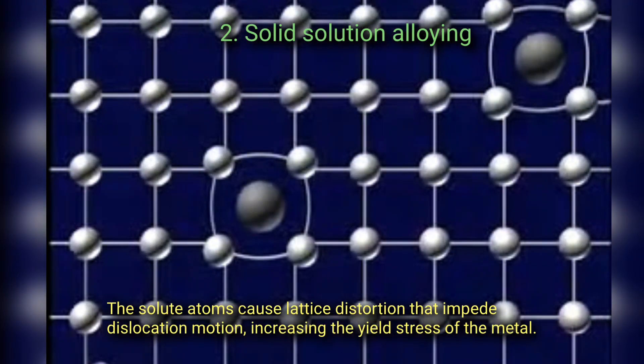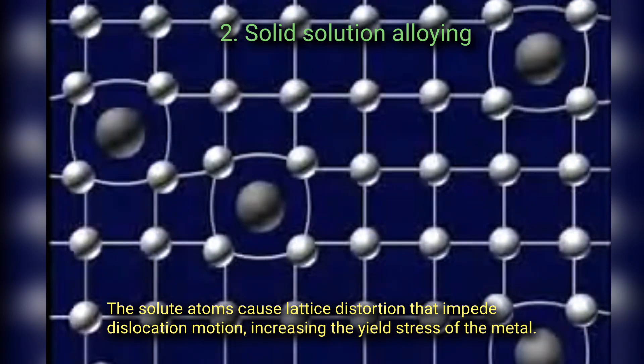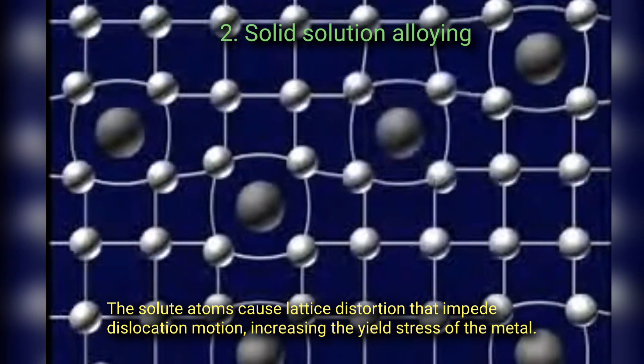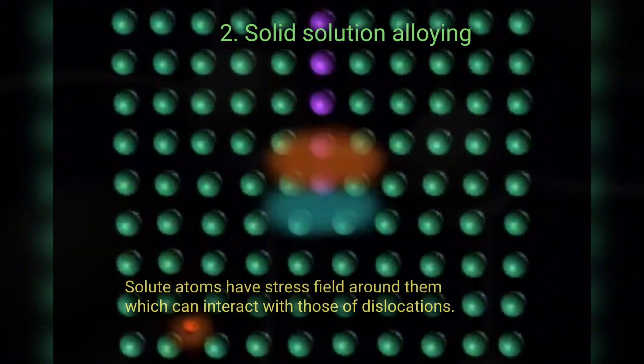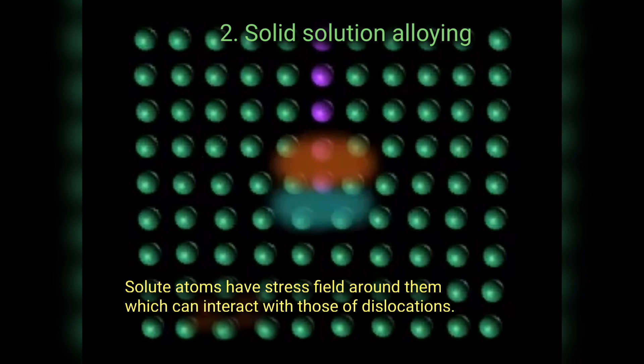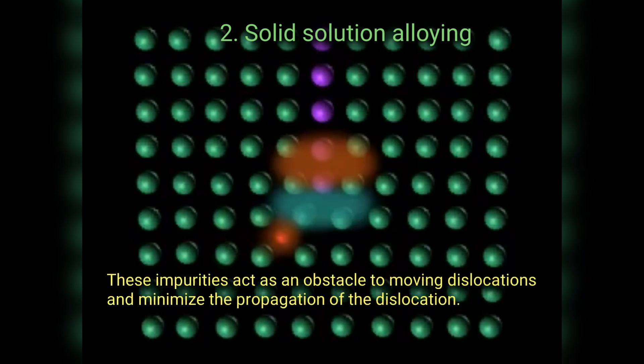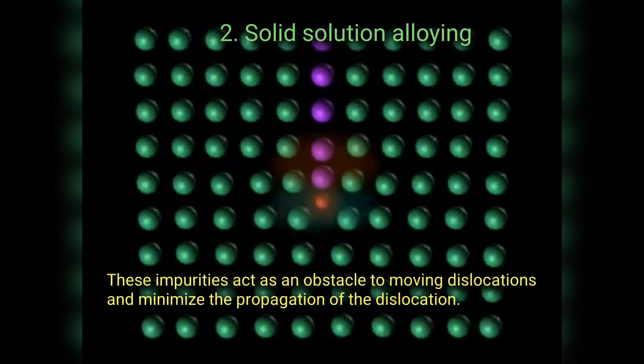The solute atoms cause lattice distortion that impedes dislocation motion, increasing the yield stress of the metal. Solute atoms have stress fields around them which can interact with those of dislocations. These impurities act as an obstacle to moving dislocation and minimize the propagation of the dislocation.